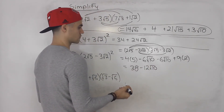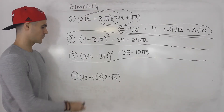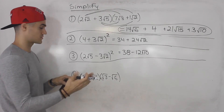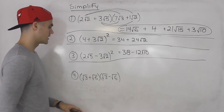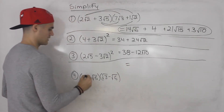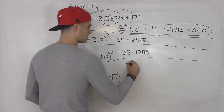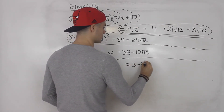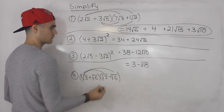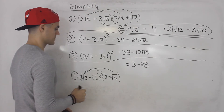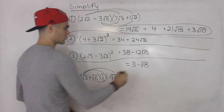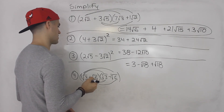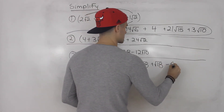For number 4, we have (√3 + √6)(√3 - √6). Notice this is actually a difference of squares, so the middle terms are going to cancel out. But let's do the full FOIL process so you can see it. √3 times √3 is just 3. Then √3 times negative √6 gives us negative √18. √6 times √3 gives us positive √18. And √6 times negative √6 gives us negative 6.